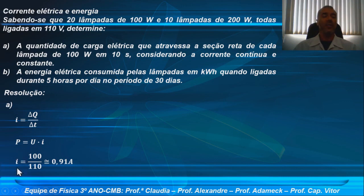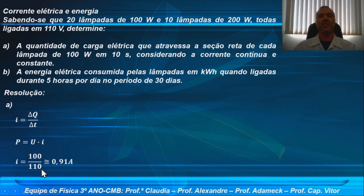A intensidade de corrente: temos a potência 100 watts, no caso da lâmpada de 100 watts. E 110 volts é a DDP que essa lâmpada está sendo ligada. Então, 100 dividido por 110, aproximadamente 0,91 amperes. Lembre-se que amperes é o coulomb por segundo, sistema internacional.